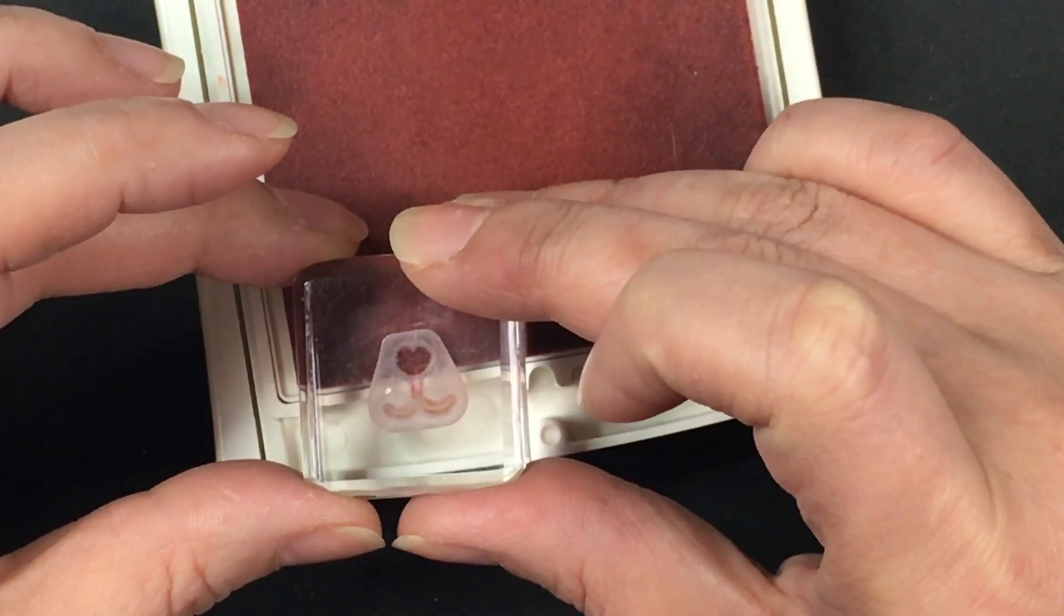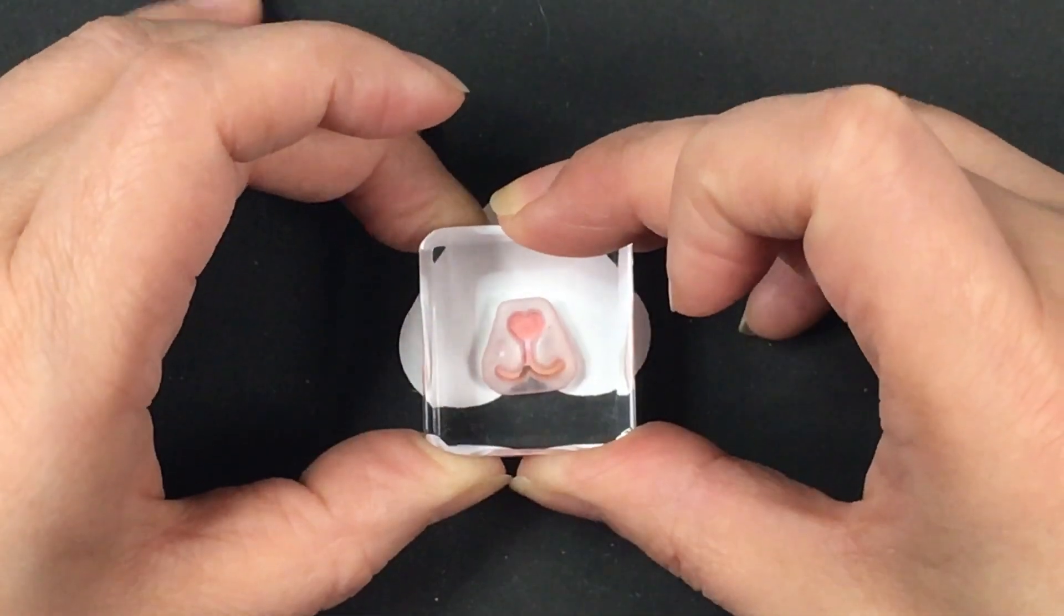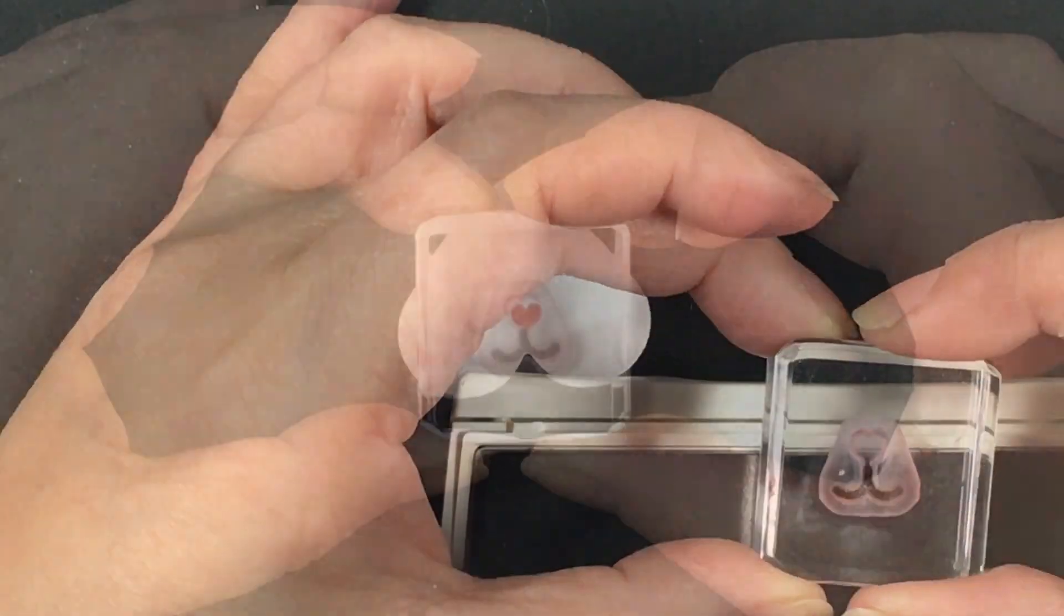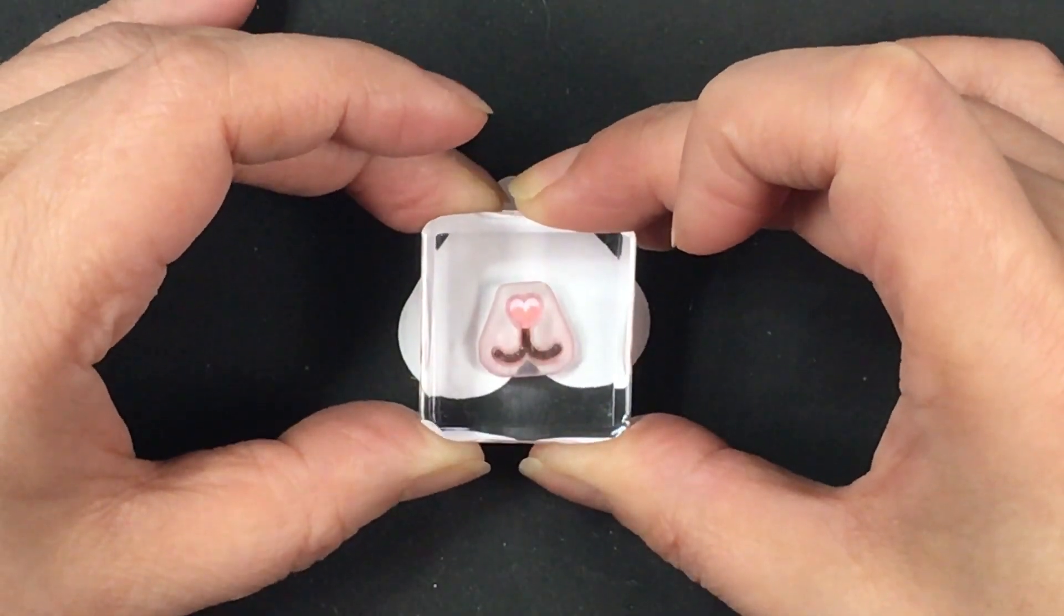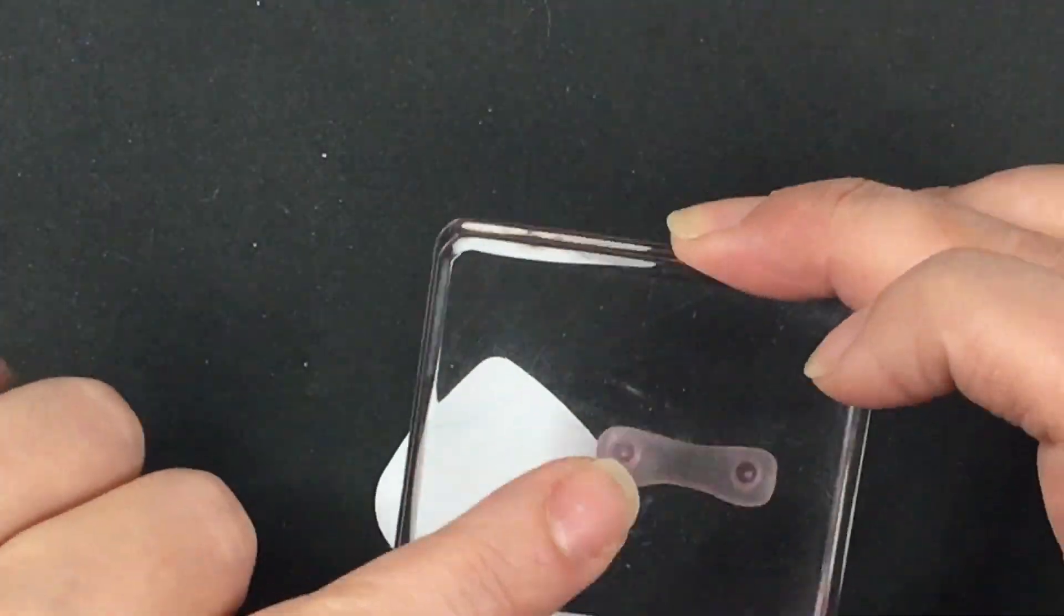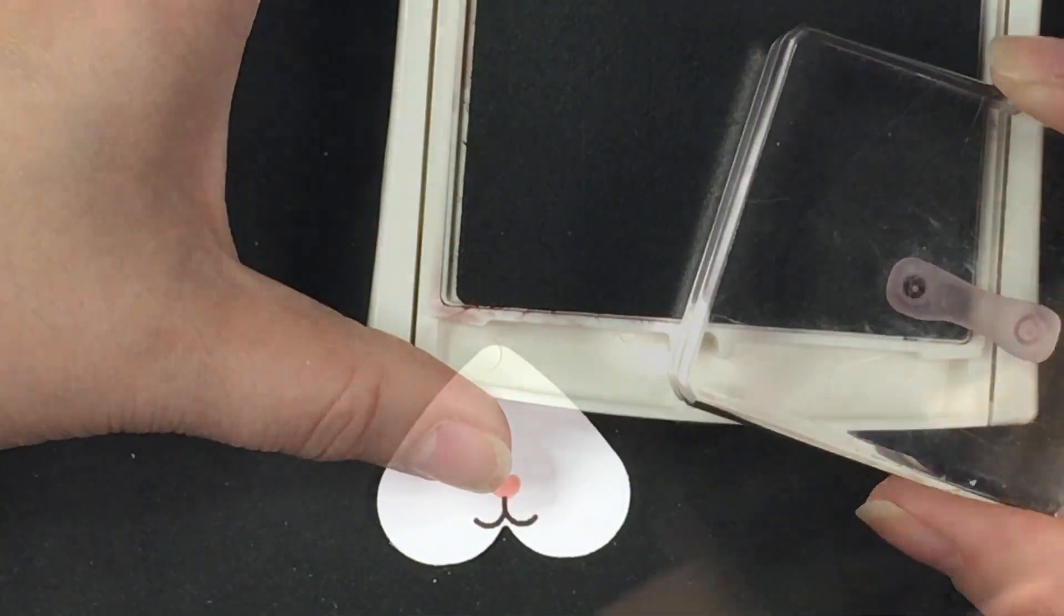But we're going to start with the bunny face with that heart piece there and we're going to stamp out the nose in Blushing Bride and then we're going to stamp the mouth with Chocolate Chip. And try not to make it too long, that mouth part.